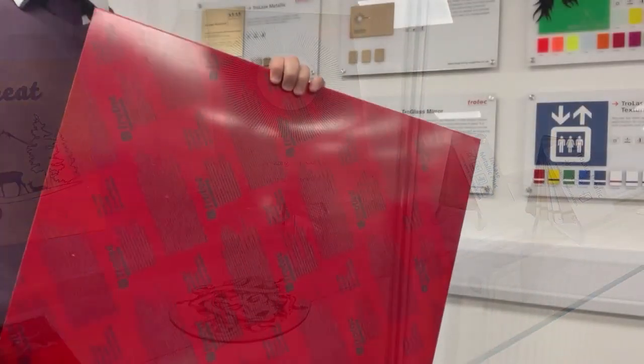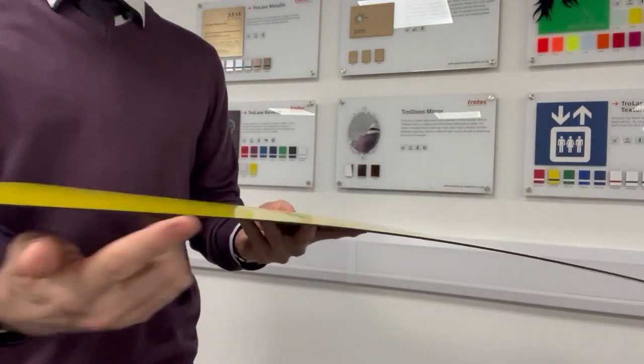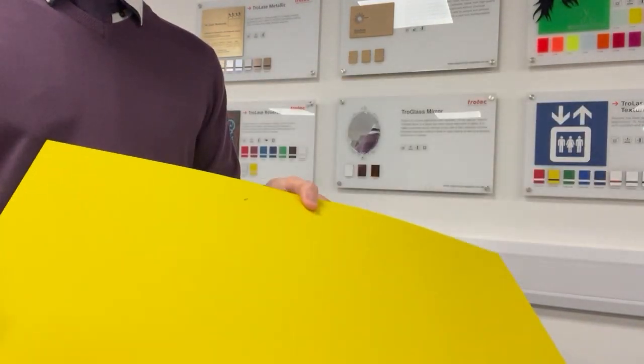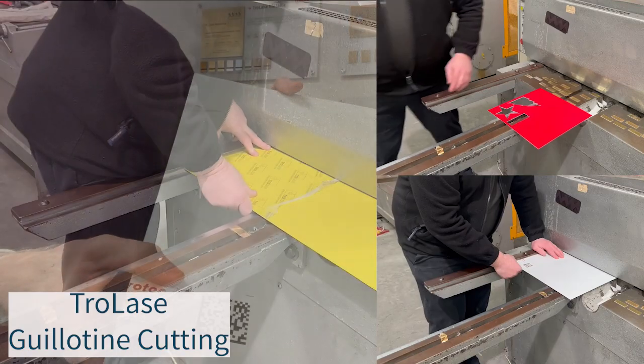Trotec is a two-ply laminate designed for laser cutting and engraving, offering a range of benefits including a thin top layer for detailed engraving at high speeds and reduced residue when laser processing, reducing cleaning time.